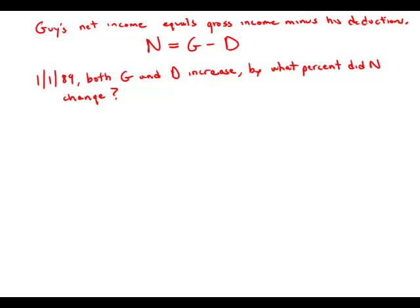Statement number one tells us that the gross income increased by four percent, so the new gross income equals the old gross income times 1.04, which is the multiplier for a four percent increase. That tells us how much the gross increases but tells us nothing about how much the deductions increase, so that by itself has to be insufficient.